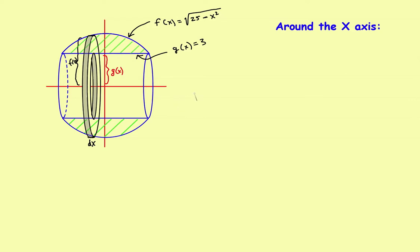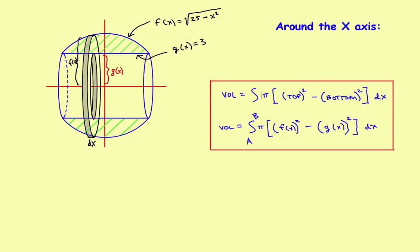Now that the problem is set up, let's look at the formulas from the part 1 video. It's basically the integral of pi times the top function squared minus the bottom function squared — or in our case, f of x squared minus g of x squared. The way our problem is set up, f of x is above g of x, so that's the top function, and g of x is the bottom function.